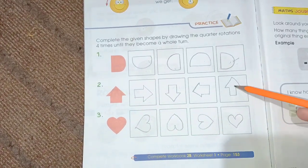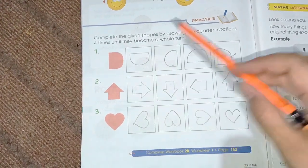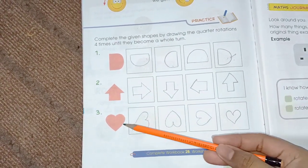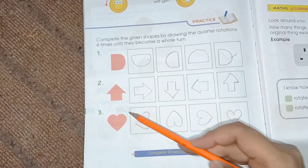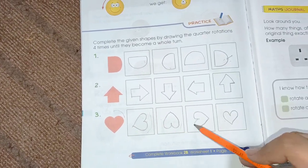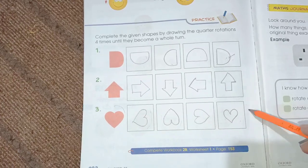Same as it is, we have to turn the shape again and again. Then we get the same shape in the last. It means we complete the turn.